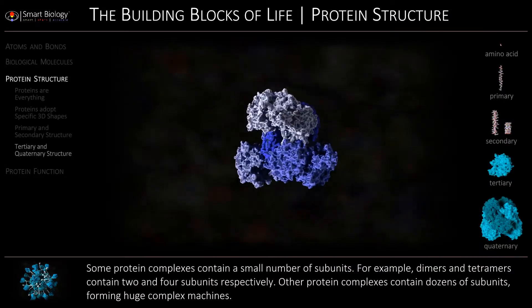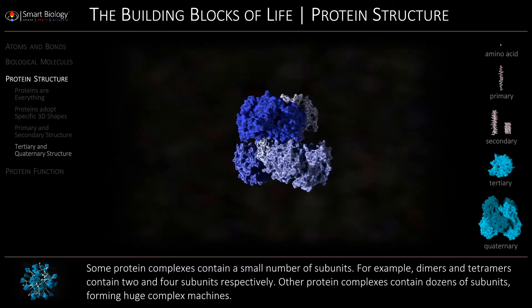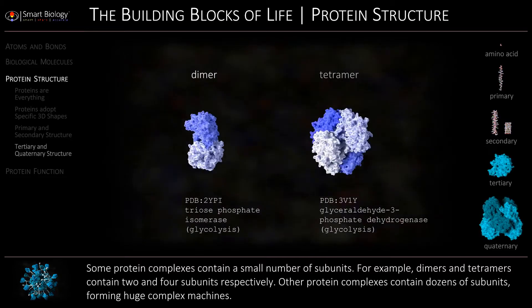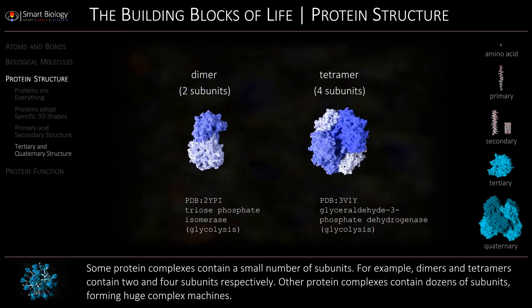Some protein complexes contain a small number of subunits. For example, dimers and tetramers contain 2 and 4 subunits respectively.